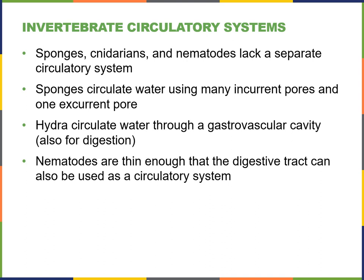Invertebrate circulatory systems — this would include things like sponges, cnidarians, and nematodes — they actually lack a separate circulatory system. They have what's known as an open circulatory system. A sponge will just circulate water that has oxygen in it and it goes in and out of its pores. Hydra circulate water through the gastrovascular cavity, which they also use for digestion, and nematodes are thin enough that their digestive tract can also be used as a circulatory system.